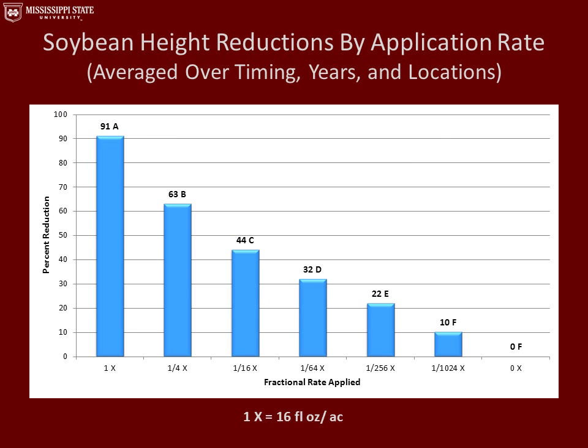This graph represents soybean height reductions by application rate, averaged over all application timings, years, and locations. On the y-axis is percent reduction, and on the x-axis is the fractional rate applied. With the 1x rate we had a 91% height reduction, and with the 1/1024x rate we had a 10% height reduction. However, that 10% height reduction was not significantly different from the untreated check.